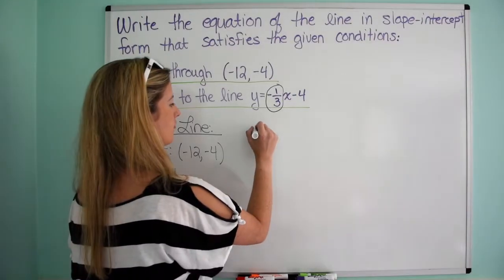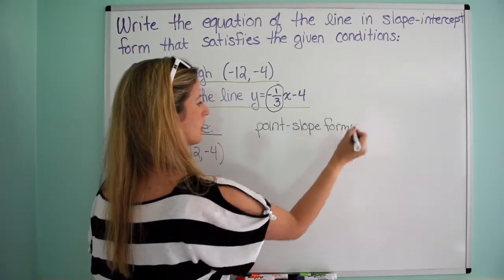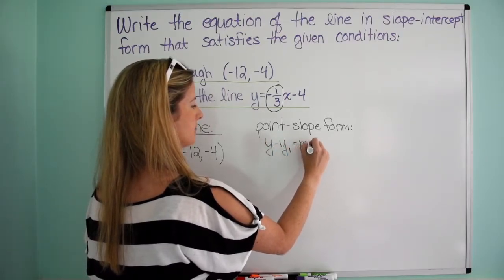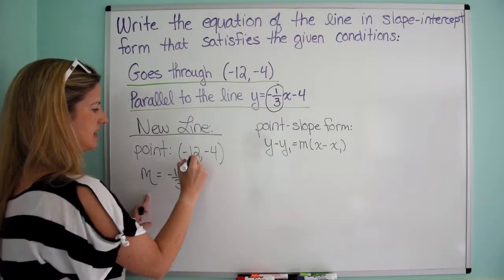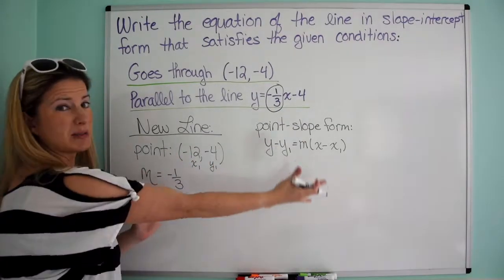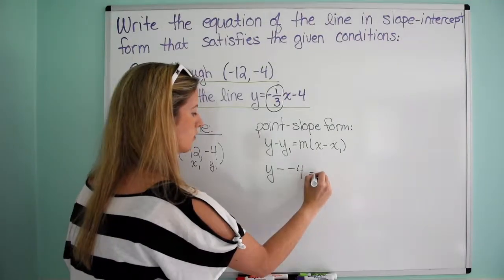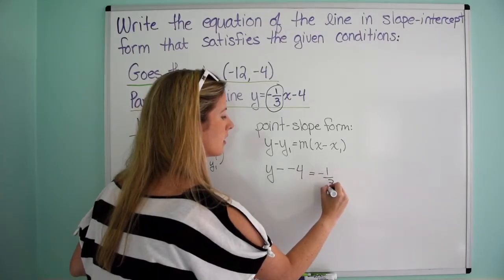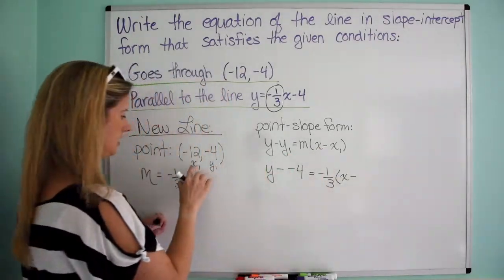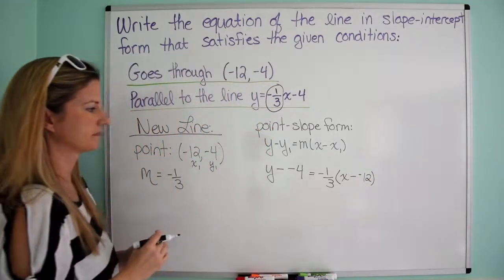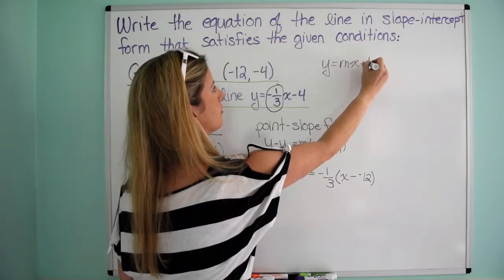Point-slope form is: y minus y1 equals m times x minus x1. I've got my m and my x1, y1. So I plug everything in: y minus y1, which is negative 4 — so minus negative 4 — equals m, negative one-third, times x minus x1, which is negative 12. Then simplify it out to get it in y equals mx plus b form.